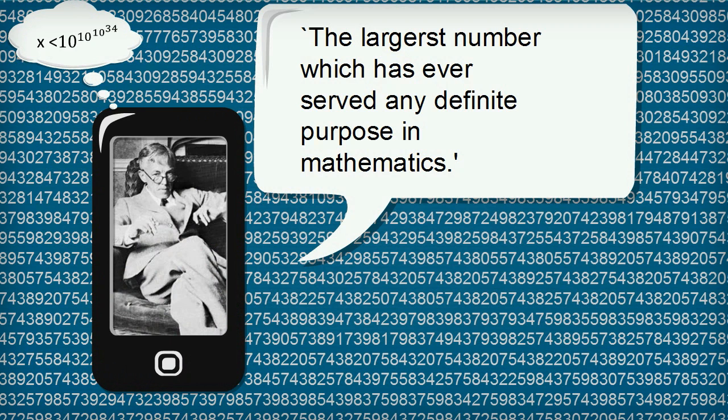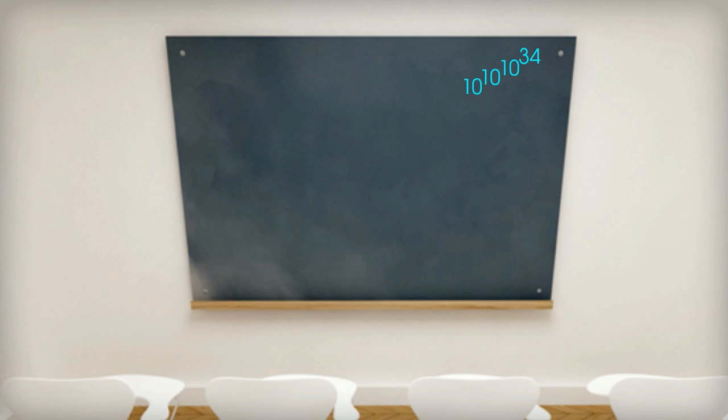This is the number that Hardy described as the largest number which has ever served any definite purpose in mathematics. But just how large is this number? Well let's see. Let's make sure we understand the idea of raising 10 to the power of something. If we write 10^6, we mean we multiply 10 by itself 6 times. This gives us 1 followed by 6 zeros. This is 1 million.